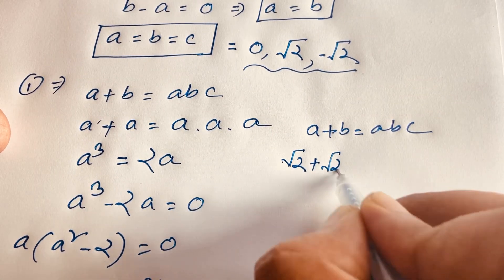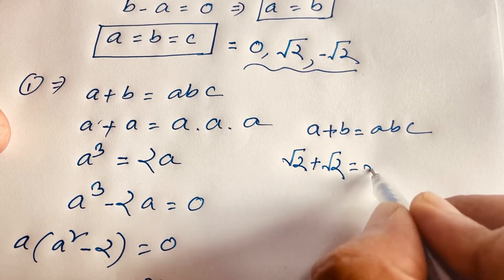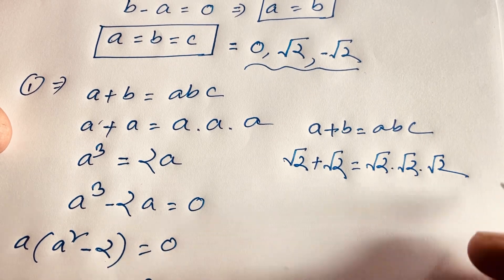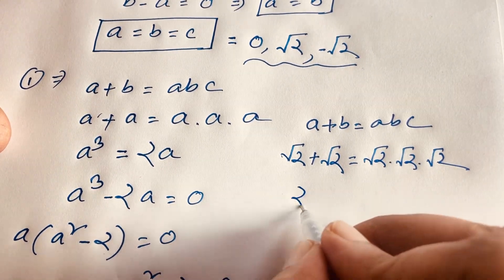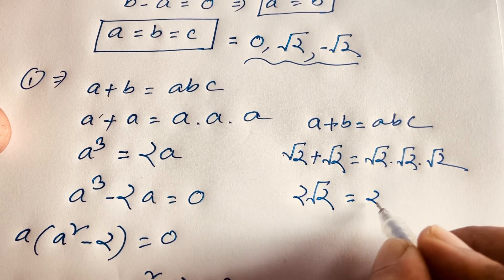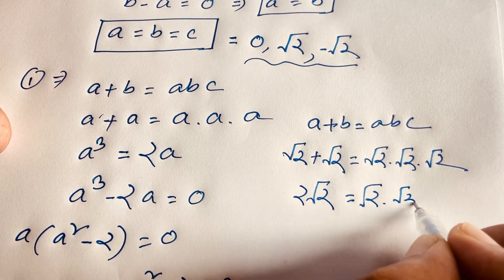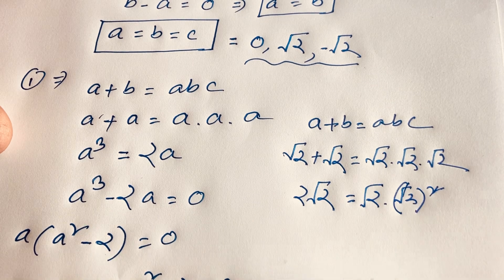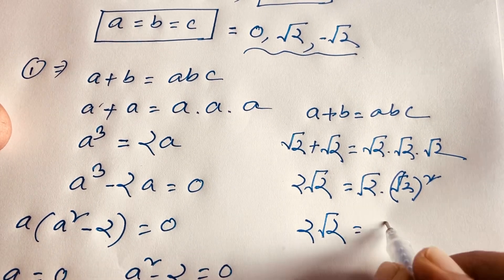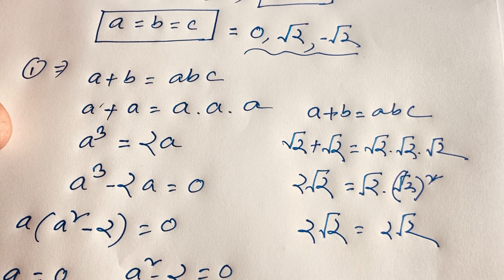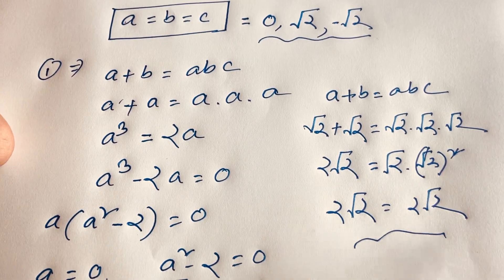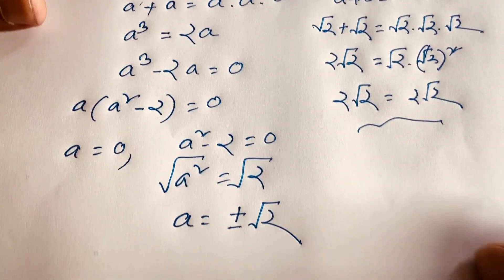Now if a equals square root 2 and b equals square root 2, we get square root 2 plus square root 2 equals square root 2 times square root 2 times square root 2. That is 2 square root 2 equals 2 times square root 2, which confirms 2 square root 2 equals 2 square root 2. Left hand side equals right hand side. So our final answer is 0, square root 2, and minus square root 2.